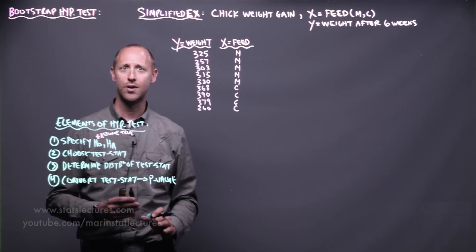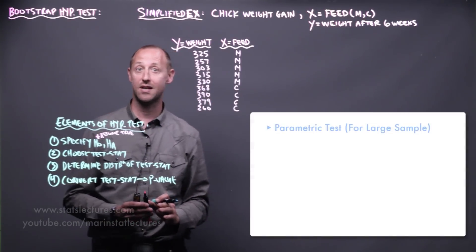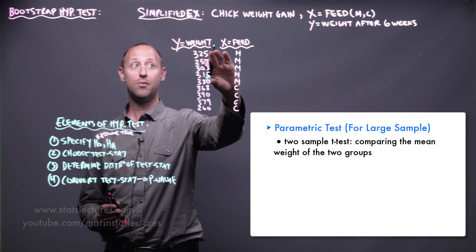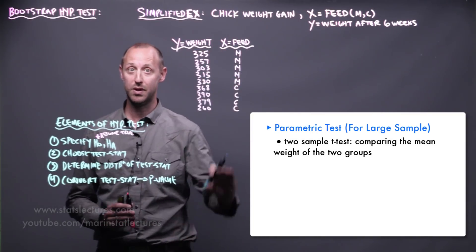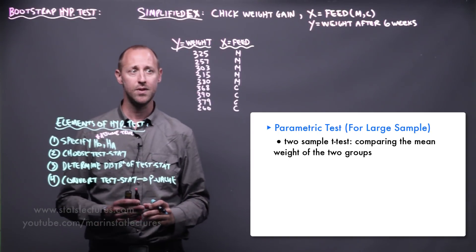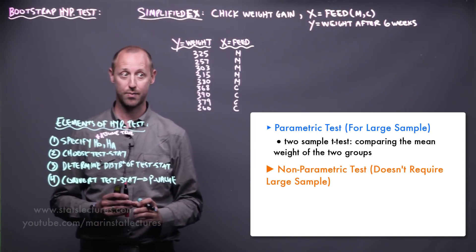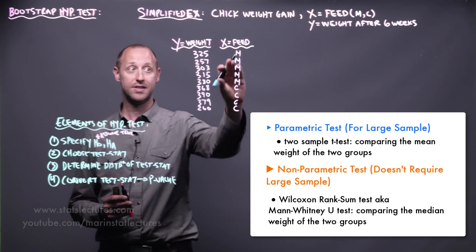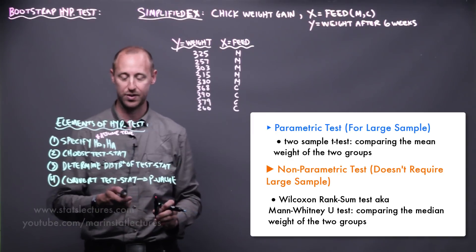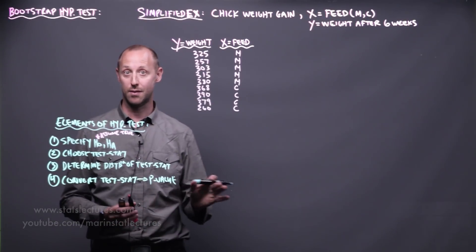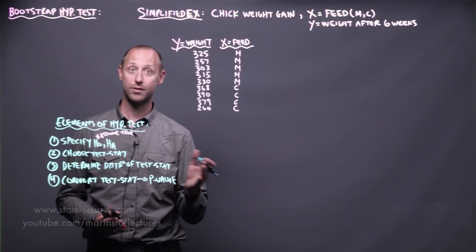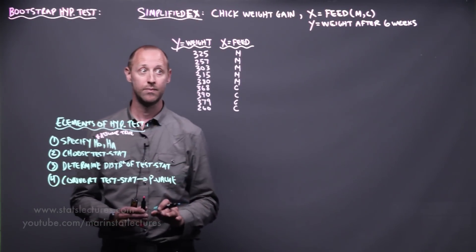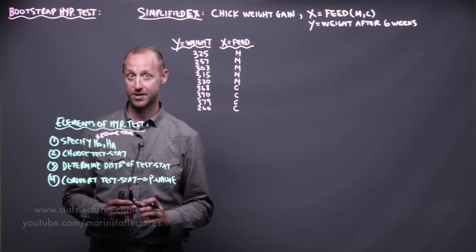Ways of comparing these two groups: we've seen large-sample approaches like the two-sample t-test, comparing the mean weight for those on meat meal to the mean weight for those on casein. We can also do non-parametric approaches like the Wilcoxon rank-sum test or the Mann-Whitney U test, which test whether the medians between the two diets differ. Or rather than those approaches, we can do a bootstrapping approach.